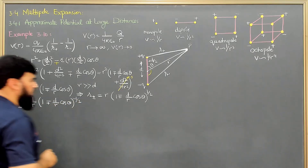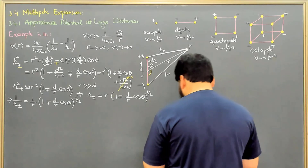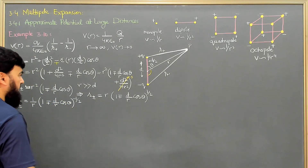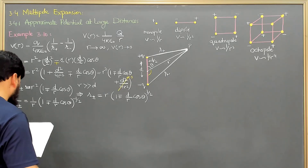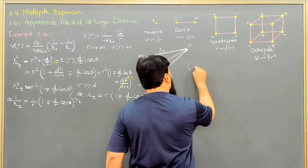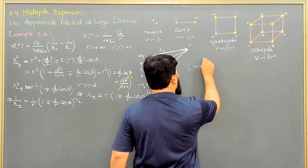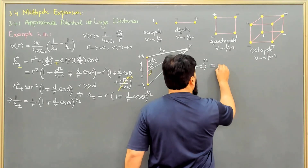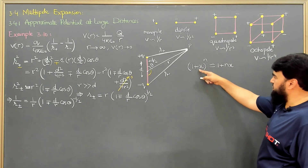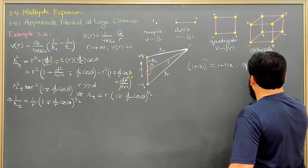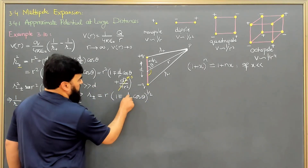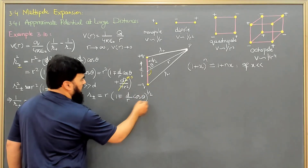I can use the binomial expansion here. The binomial series gives (1 + x)^n ≈ 1 + nx when x is very small, ignoring higher-order terms. Here x is (d/r)cosθ, and since r is greater than d, this quantity is small.